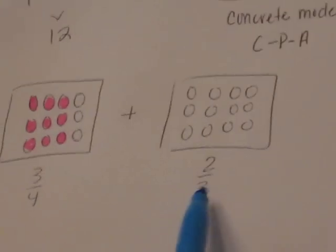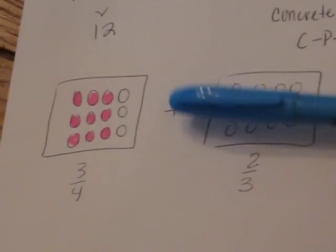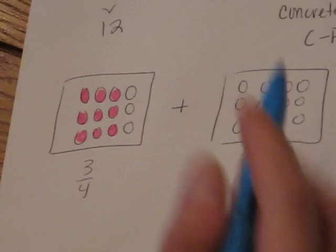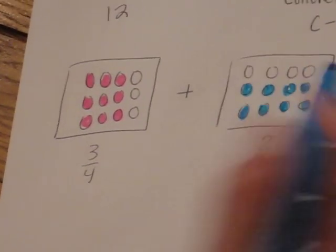Over here in this model, they're trying to shade two out of three. Well, where did they see the three? They see it in the three rows. So they want to shade two out of three.